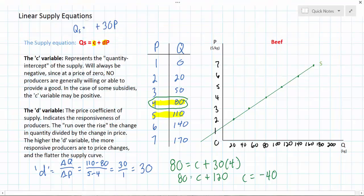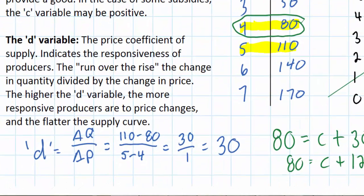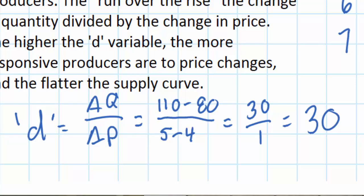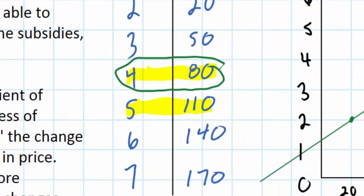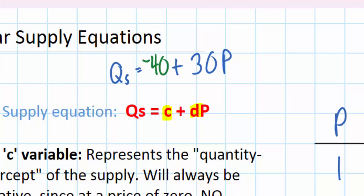I now have my complete supply equation. The C variable — the quantity intercept of supply — is negative 40. In this video we started with only a supply schedule, which we then plotted on a supply graph. Once we had the supply graph, we could extend the supply curve beyond the price axis and show that the Q intercept of supply is actually negative. To find that Q intercept, we first had to find the D variable, which is the change in quantity divided by the change in price, and then we plugged in one price-quantity combination from our supply schedule to calculate C as negative 40.